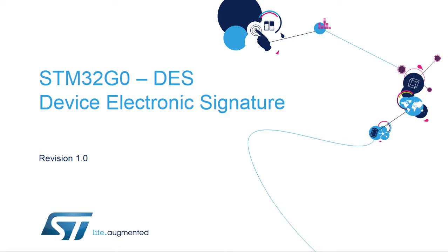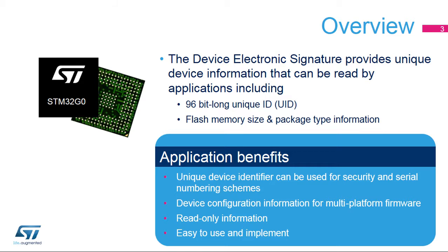Hello, and welcome to this presentation of the STM32 Device Electronic Signature, which can be used as a device identification or serial number. The Device Electronic Signature provides a set of registers containing die identification, unique device identifier or UID, and other read-only device information, such as memory size, package type, and device calibration information.